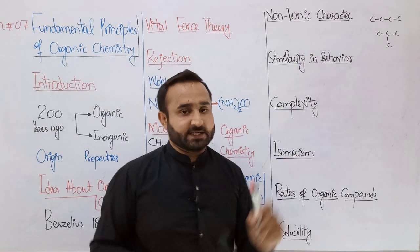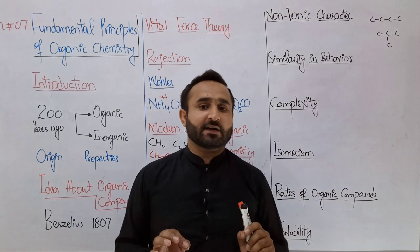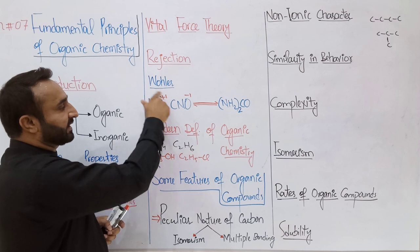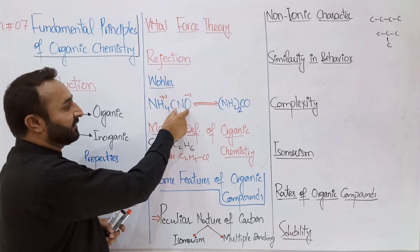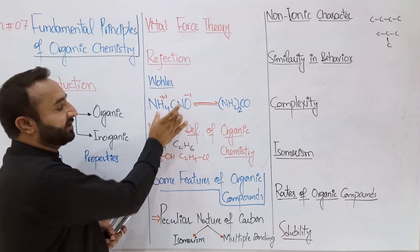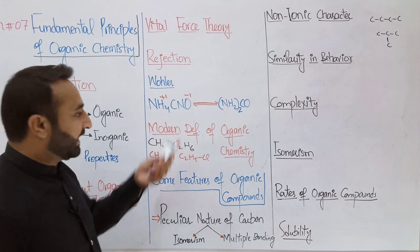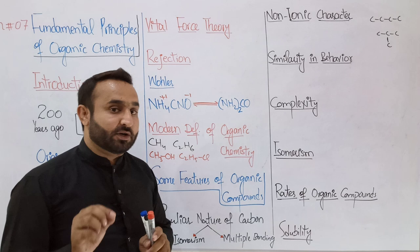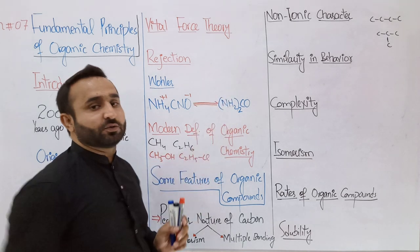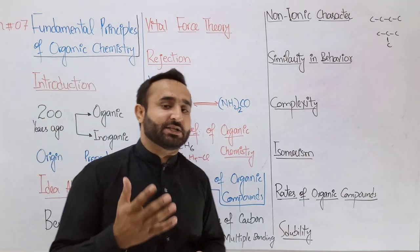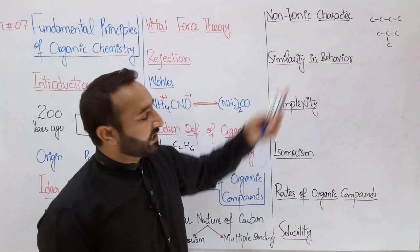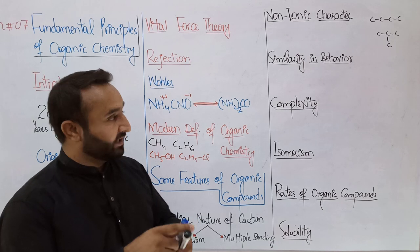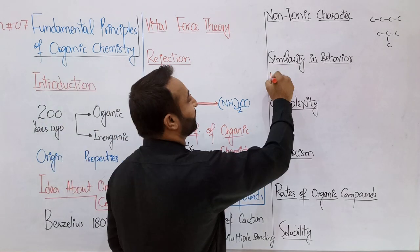Non-ionic character: organic compounds are non-ionic in nature. For example, ammonium cyanide has a cation and an anion, but organic covalent compounds do not have positive and negative poles. Another important feature is similarity in behavior — organic compounds form homologous series.